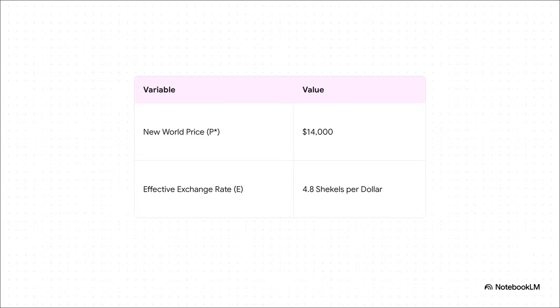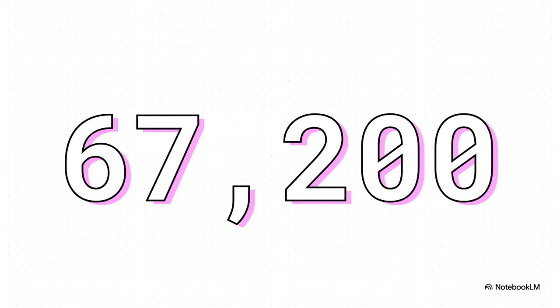So here are our new inputs for the same simple formula. We take that new world price, $14,000, and we multiply it by our new tariff-adjusted effective exchange rate of 4.8. And would you look at that? The new local price is 67,200 shekels. Now think about that for a second. Even though the car itself got more expensive in dollars, the final price you pay here has actually dropped. Kind of wild, right?